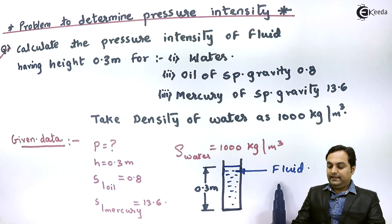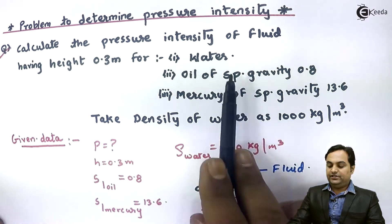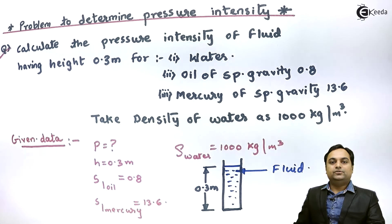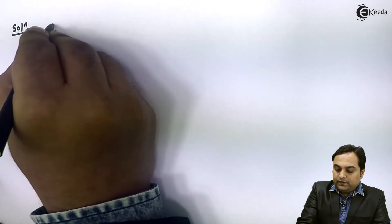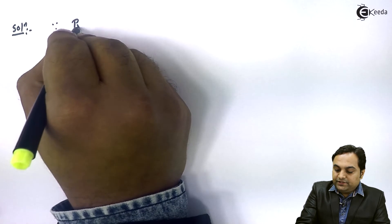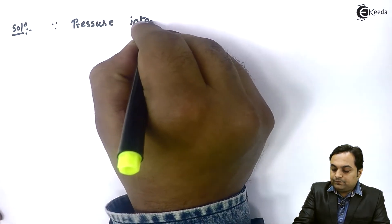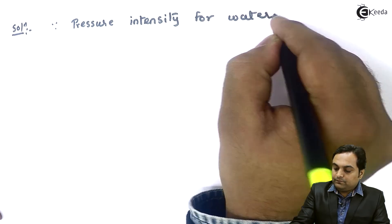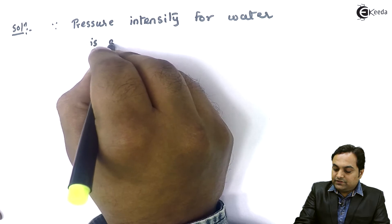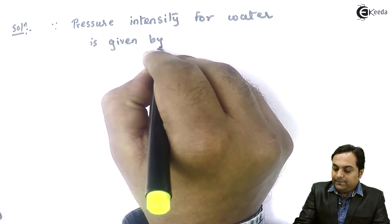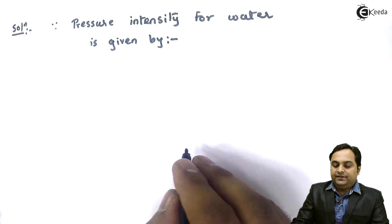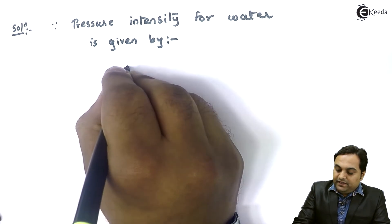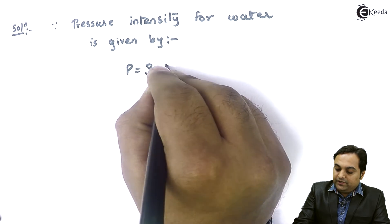Each time the fluid will change — first it will be water, then oil, and then mercury. Let us find the solution. For water, pressure intensity is given by the formula from hydrostatic law: P is equal to rho times G times H.